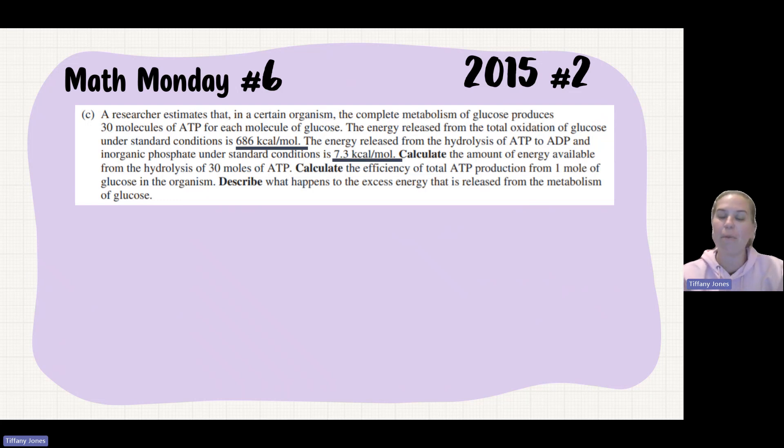So we're going to calculate the amount of energy developed from the hydrolysis of 30 moles of ATP. We know that one mole of ATP is 7.3 kilocalories, and we have 30 moles of ATP, so you're just going to multiply. 7.3 times 30 gives us 219. Now notice that I have units there - don't leave any naked numbers. So it should be 219 kilocalories.